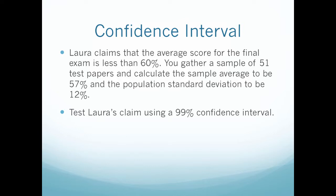Lara claims that the average score for the final exam is less than 60%. You gather a sample of 51 test papers and calculate the sample average to be 57% and the population standard deviation to be 12%. Test Lara's claim using a 99% confidence interval. So ultimately we need to find a 99% confidence interval and then compare Lara's sample average of 57% to see if it's within that confidence interval or not.